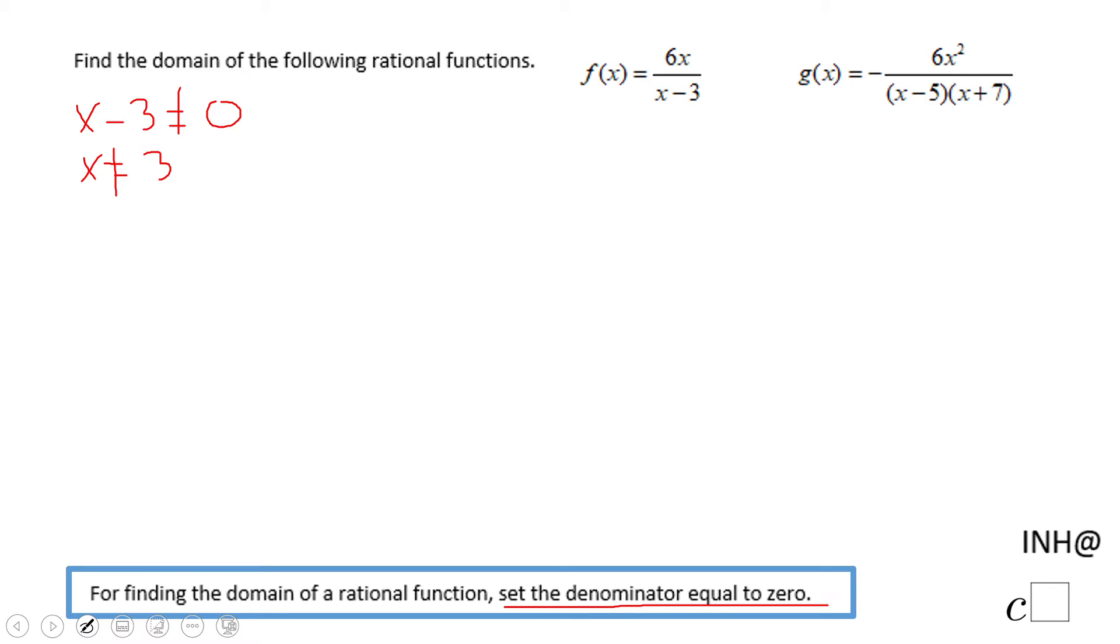How do I write that in interval notation? Look here: negative infinity, 3, union, 3, infinity.